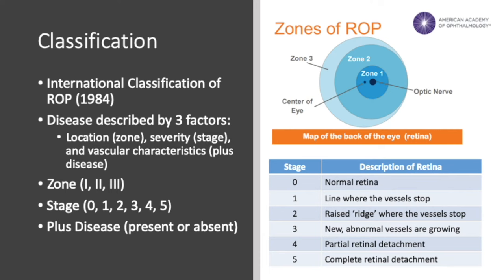To understand how ROP is treated, we must first discuss how ROP is described clinically and diagnosed. ROP is evaluated based on three sets of features: first, the location within the retina of the aberrant development; second, the severity of that abnormal process; and third, the vascular characteristics of vessels at the posterior pole. The location is described by zones, which form concentric rings around the optic nerve. Zone one makes up the posterior pole, while zones two and three describe the mid and far peripheral retinas respectively.